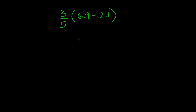So here I have 3 fifths times, and then in parentheses, 6.9 minus 2.1. So where do you even start with a problem like this? Well, you always start with your order of operations. And in case you don't remember it, I'll write the acronym up here, and it is PEMDAS.